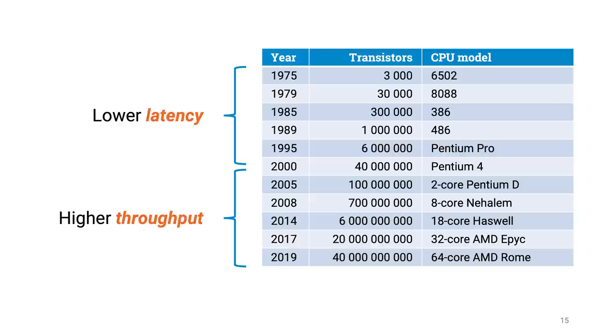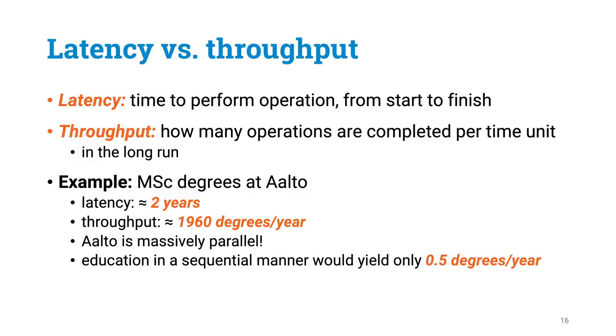Put otherwise, until 2000, latency of operations kept improving. While after year 2000, latency has remained roughly constant, while throughput of CPUs has improved. So let's have a look at these two terms — latency and throughput — because these are going to be very important when we try to understand efficient use of modern CPUs. Latency, roughly speaking, means the time it takes to complete one operation from start to finish. Throughput, on the other hand, means how many operations we can complete in the long run per time unit.